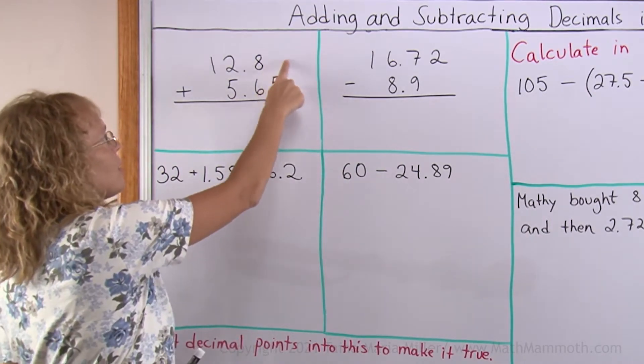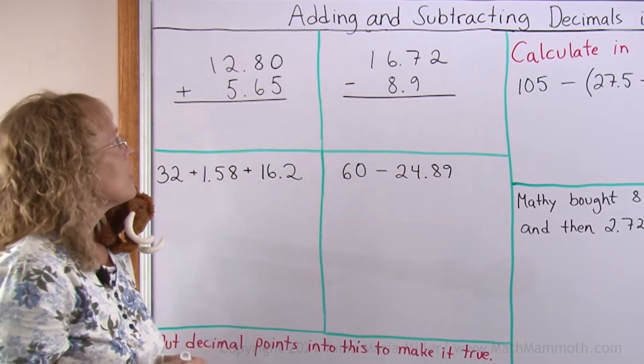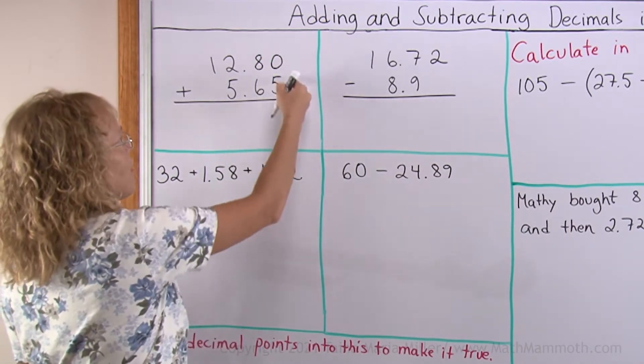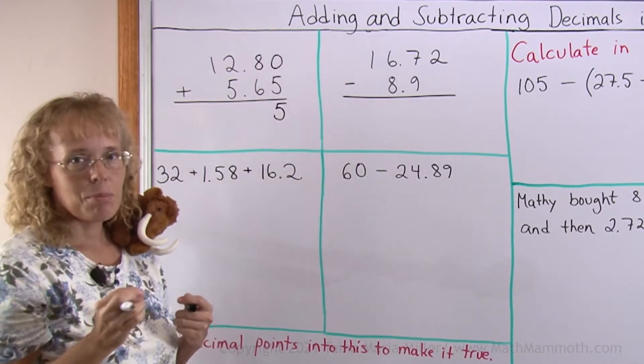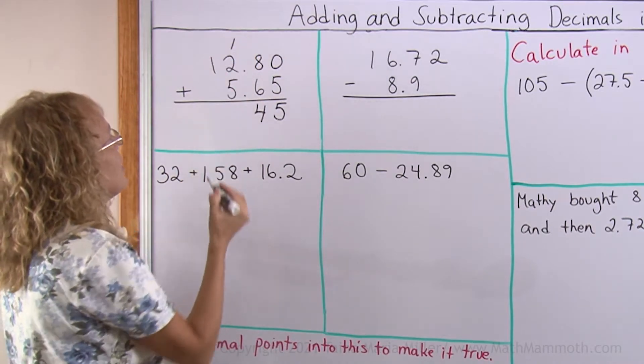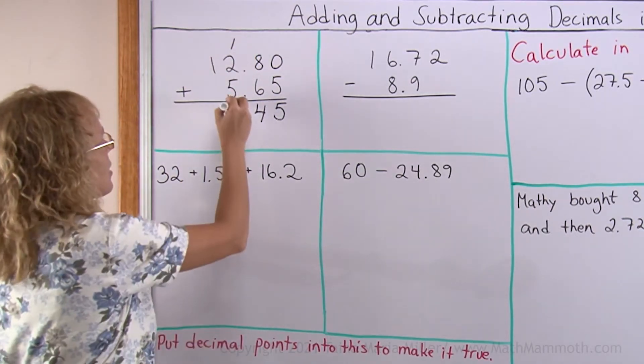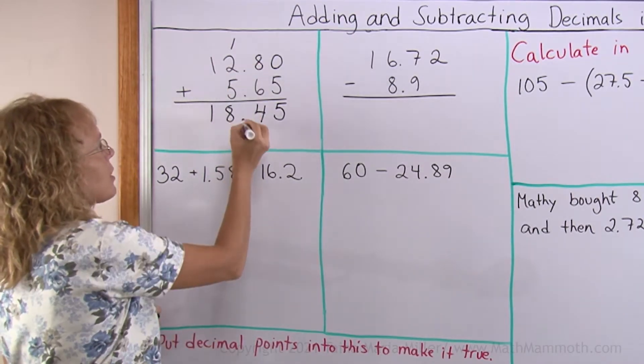Now there's nothing here, so I can add a zero there to make adding easier. And I'll just add zero plus five here is five. And then here in the tenths place, eight plus six is fourteen and I carry over here. Then one plus two plus five is eight and then one. And lastly, you just add the decimal point right there where it is.